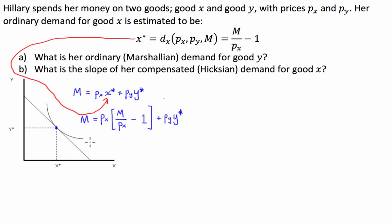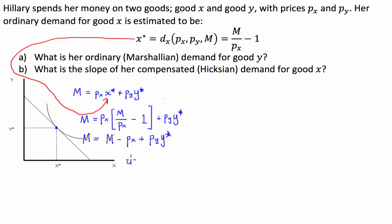We multiply out the bracket. The two price-of-X terms cancel, leaving M equal to M minus price of X plus price of Y times Y star. Rearranging — the income terms cancel out — and dividing by the price of Y, we finally get Y star equal to price of X divided by price of Y.